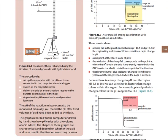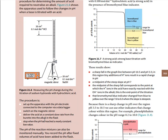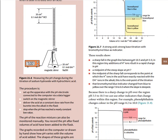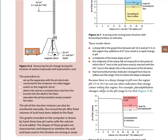You can have different reactions, and for each you choose an appropriate indicator. For a strong acid–strong base reaction, the pH range is very large and centered around pH 7. Since the range is large, you can use bromothymol blue, phenolphthalein, or litmus paper, because it works mostly when the pH is neutral or has a very large range.